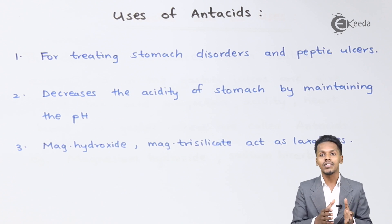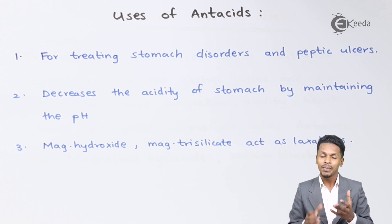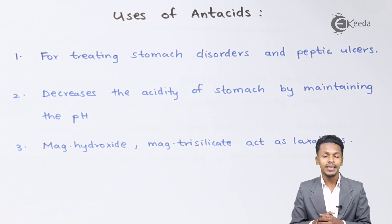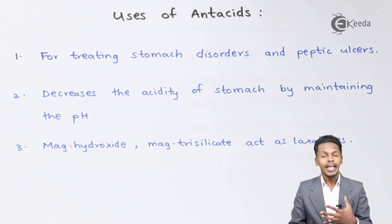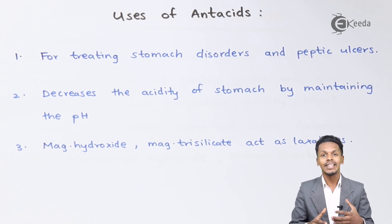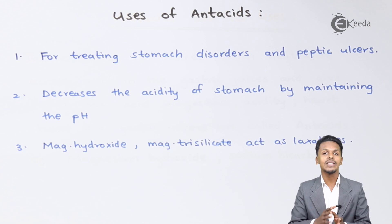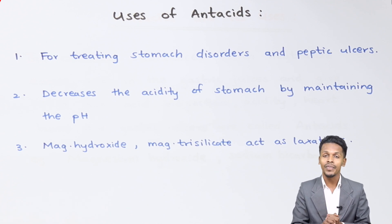Apart from magnesium hydroxide and sodium bicarbonate, we can use other chemical substances as antacids. One such substance is cimetidine, which is better than magnesium hydroxide. If we use cimetidine as an antacid, it will stop the release of histamine present on the layer of the stomach, so histamine will not be released and thereby we can prevent the release of HCl, which is how it prevents acidity.